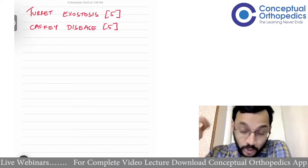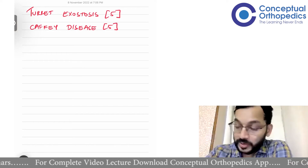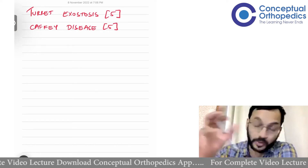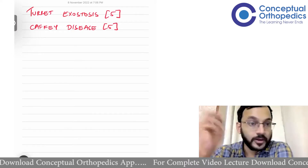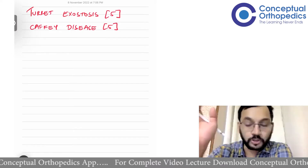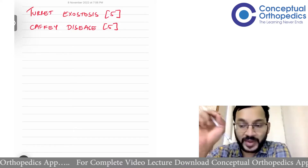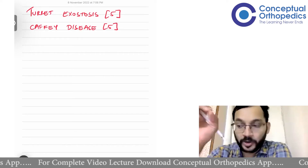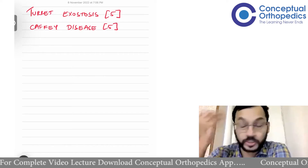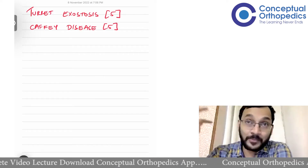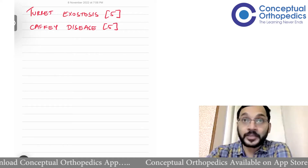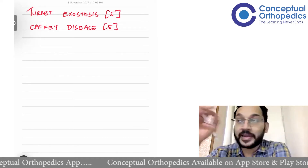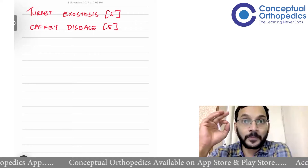The idea is not to waste a lot of time on this because you don't really know whether you're going to get the correct answer. If you're sure you know what Caffey's disease or Turret's Exostosis is, you can write for it. But if you don't know, there's no point beating around the bush — getting marks is very much dependent on whether you know what it is, because these are all named conditions.